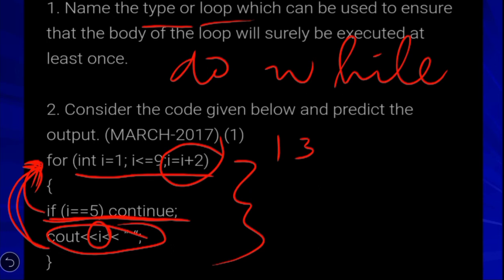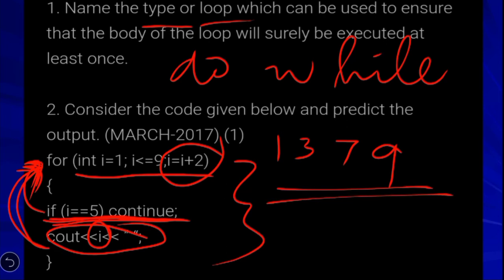When i is 7, 7 is printed. Then i becomes 9, and 9 is printed. Since i equal to 5 triggers continue, 5 is skipped. So the final output is: 1, 3, 7, 9 — with 5 skipped due to the continue statement.